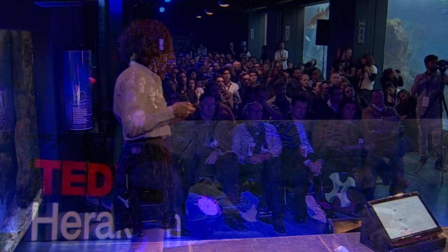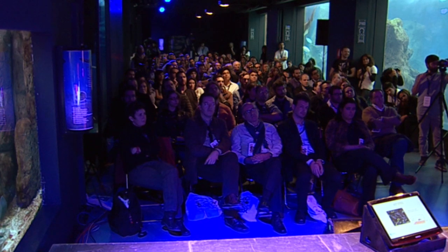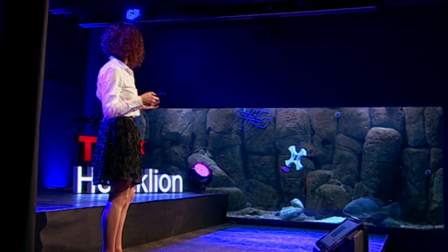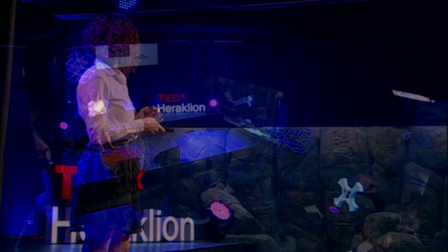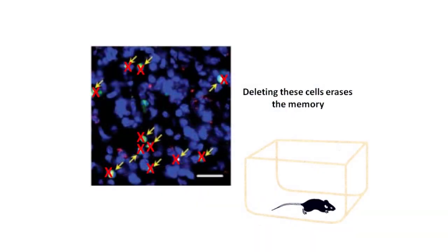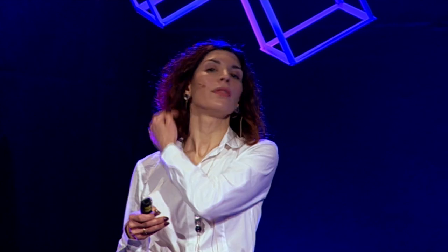The scientists in Alcino Silva's lab were also able to identify which are the particular cells in the amygdala that contain such associative memories. If you delete the cells — if you target them and delete them with a particular technique — then the memory disappears completely. The mouse will no longer respond with fear to the sound.